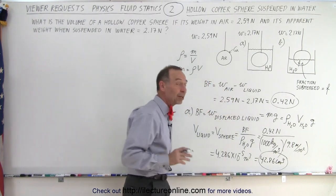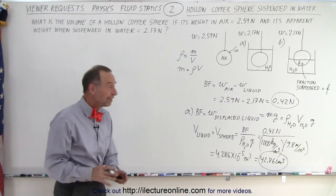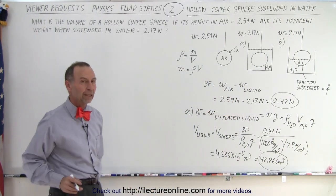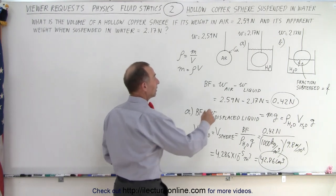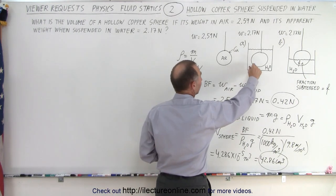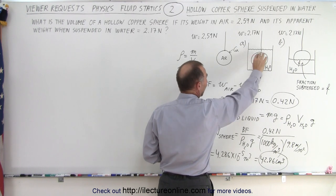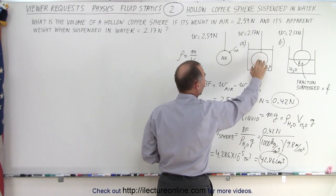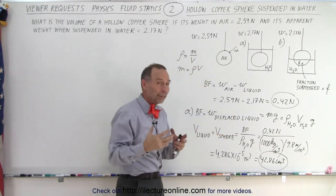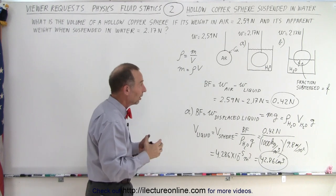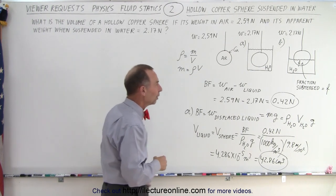So that would be the volume of the sphere assuming it was entirely suspended in the water. We'd need to assume that the copper thickness was sufficient so that the air inside combined with the copper would not be less dense than the liquid overall. But what if it wasn't completely submerged?